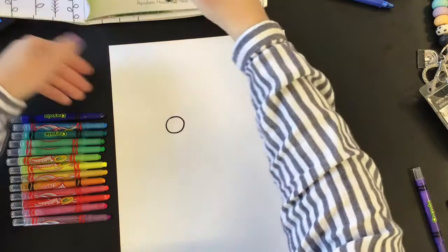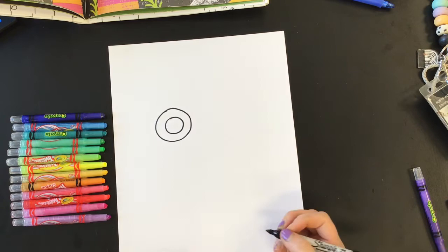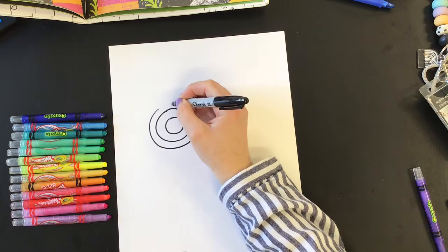Once I make my first circle I'm gonna go ahead and make another. Let's add another. Why not? Looks like a target. Doesn't really look like a flower just yet.